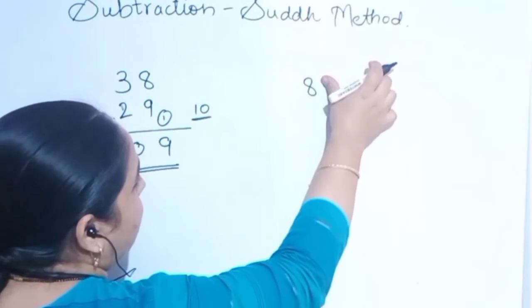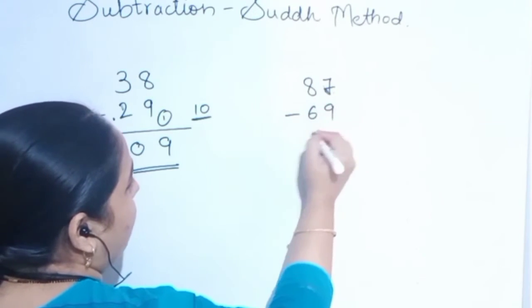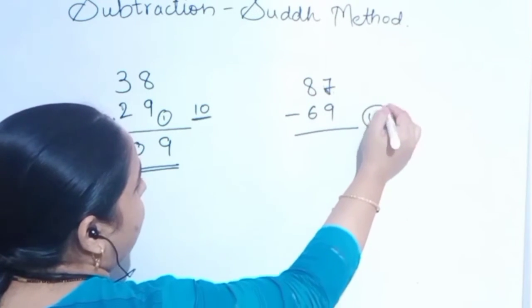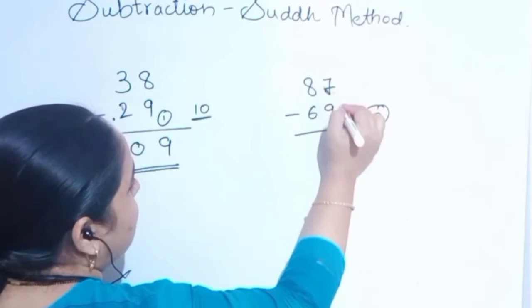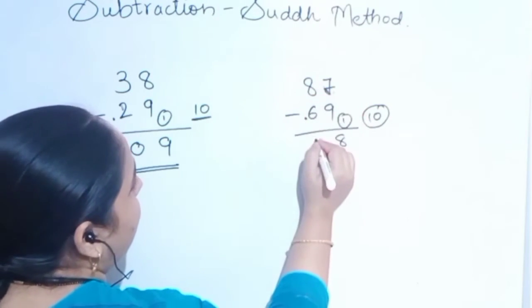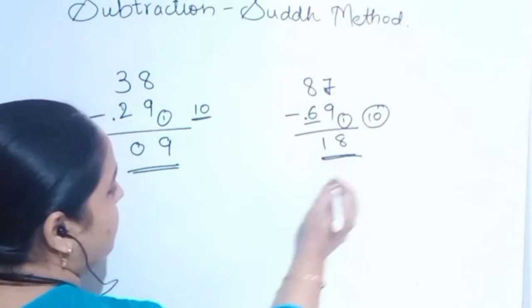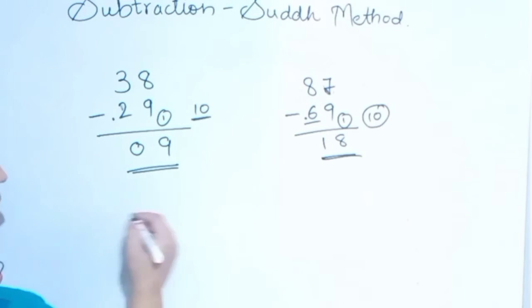We will solve a bigger number. Let us give 87 minus 69. Again, 10 is the base. So, 1. 7 plus 1 is 8. And here it is 1. It's 7. So, 8 minus 7 is 1. This is the answer.